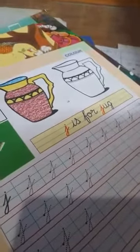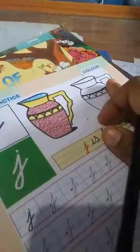Now, here you see, here is a small J. J is for Jug. J-U-G Jug. You all have to color it also.